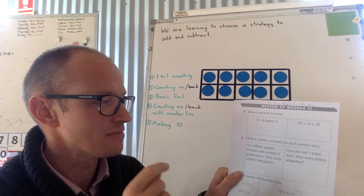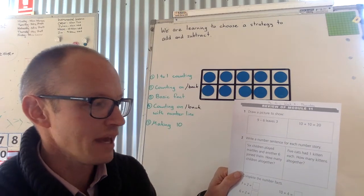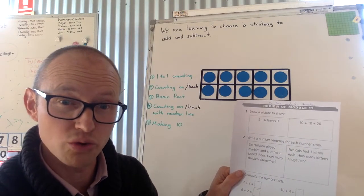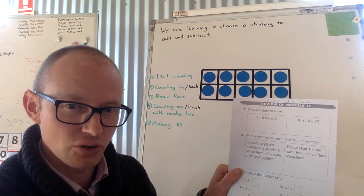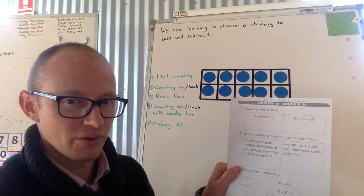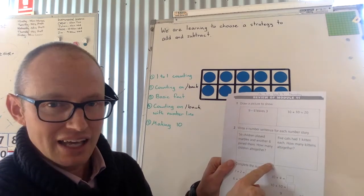Six children played marbles. Six. Another six joined them. How many children all together? Oh, clue there is all together as well. Six marbles. Another six joined all together. What is the question going to be? Write it down there. Answer it.